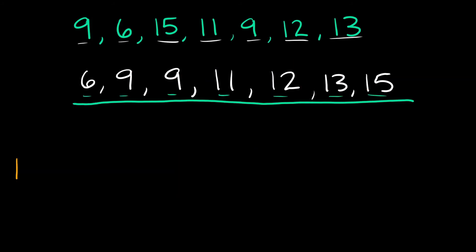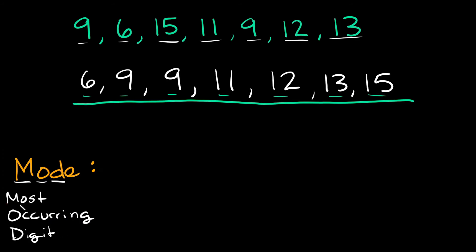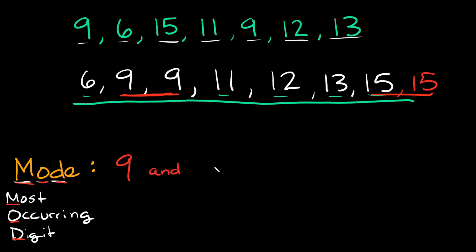Now let's talk about mode. Mode is just the number that pops up most often. A helpful way to remember it: M-O-D stands for Most Occurring Digit. Looking at our numbers — 6, 9, 9, 11, 12, 13, 15 — the mode is 9, because we have two 9s. Now if I also added an extra 15, then we'd have two 9s and two 15s, and both would be the mode. So the answer would be 9 and 15.